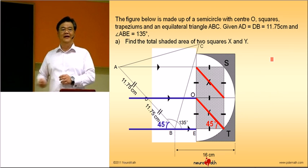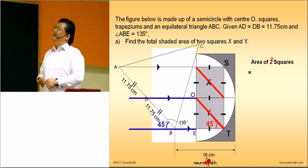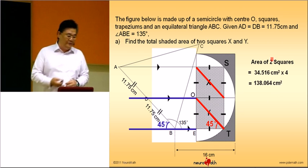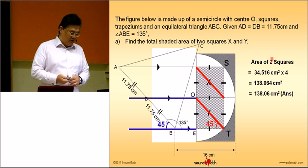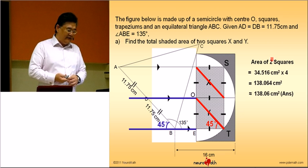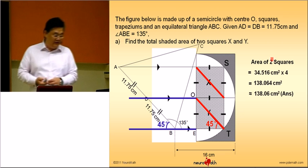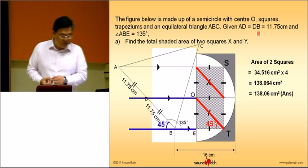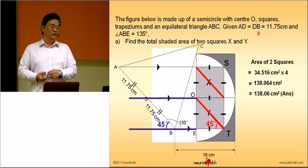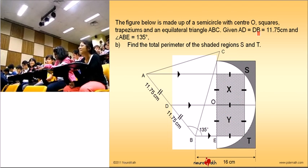how many of such triangles are there? Four. There are four. So, the area of the two squares will be 138.064. And you are requested to give to the nearest two decimal places. So, your answer will be 138.06. Simple?